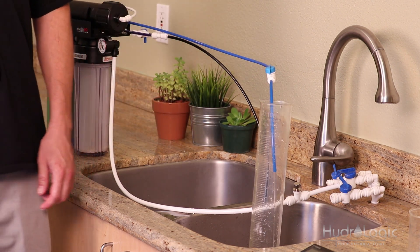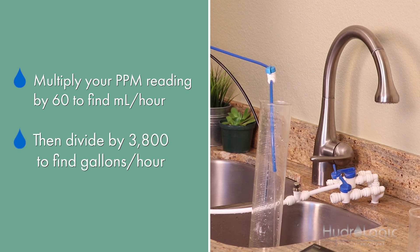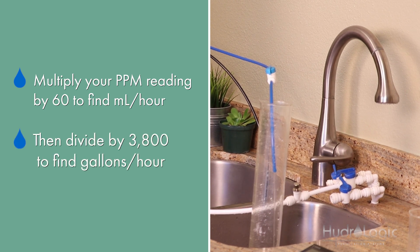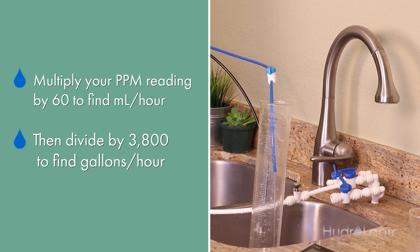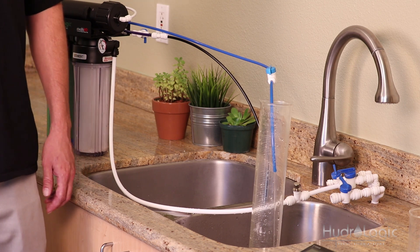Now we're talking gallons per hour here. Once we get this reading, we'll multiply it by 60 to see how many milliliters we get in an hour. Then we'll divide that by 3,800 to see how many gallons per hour we're getting. I know from previous calculations that there's roughly 3,800 milliliters in a gallon, a little less, but it's close enough for the reading we're doing right now.